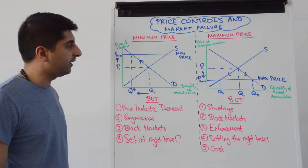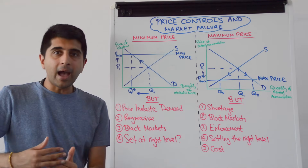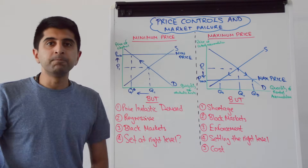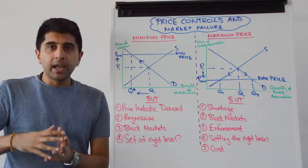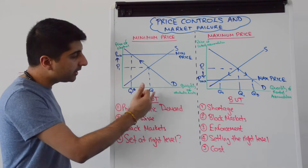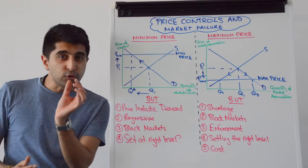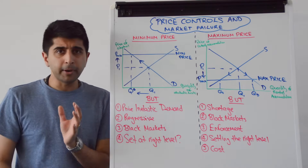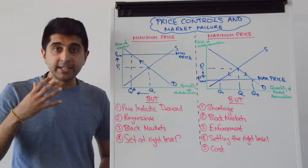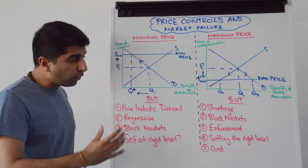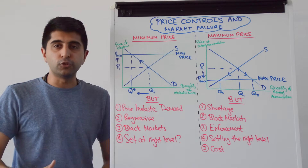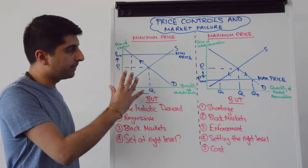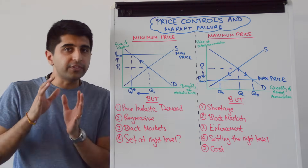In the free market at P1 and Q1 there'll be an overconsumption and overproduction of alcoholic drinks. By imposing a minimum price above equilibrium — a floor price which the price can't go below — we contract demand, discourage consumption, and quantity in the market falls from Q1 to Q*, the socially optimum level of output. The externality will be internalized, solving overconsumption and overproduction, achieving allocative efficiency and maximising welfare.